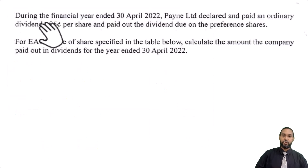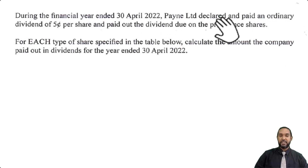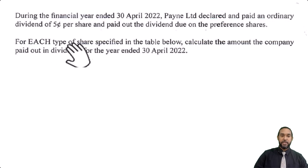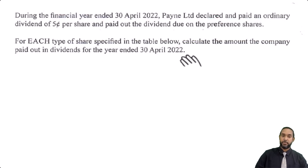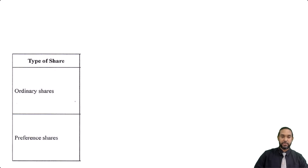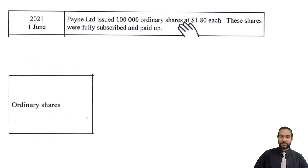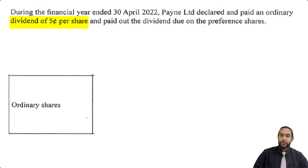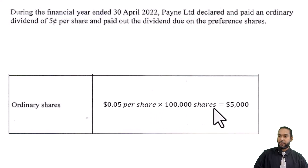Part D says: during the financial year ended 30th April 2022, Payne Limited declared and paid an ordinary dividend of 5 cents per share and paid out the dividend due on the preference shares. Calculate the amount paid out in dividends for the year. For ordinary shares: Payne issued 100,000 ordinary shares. The dividend is $0.05 per share, so 0.05 × 100,000 = $5,000 total paid out in ordinary dividends.